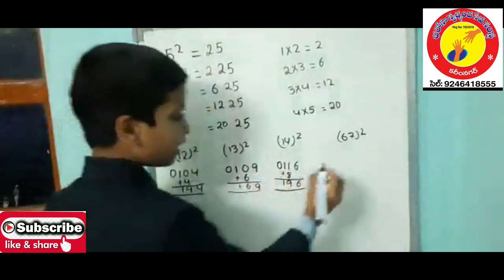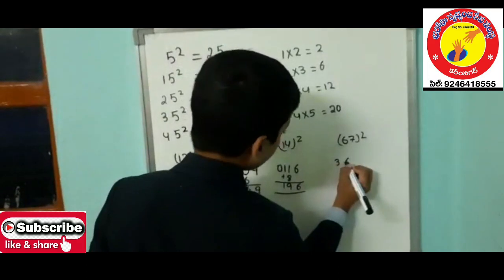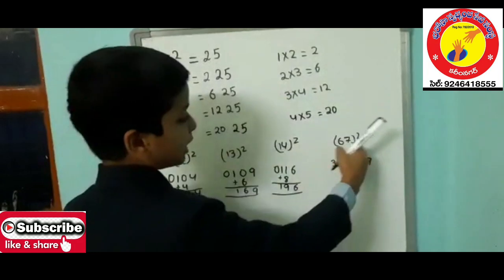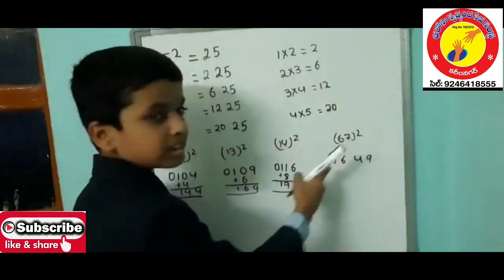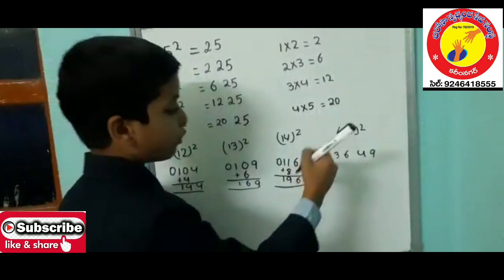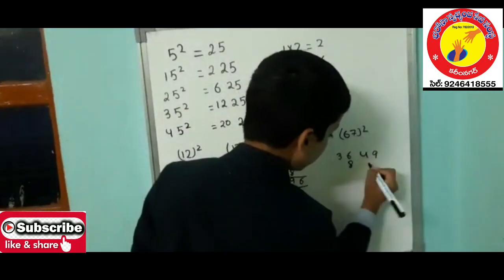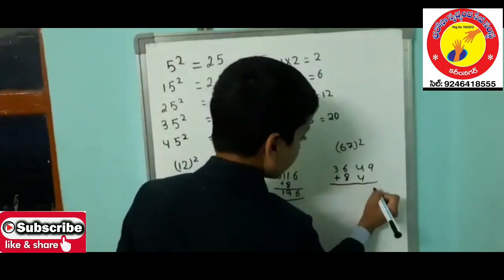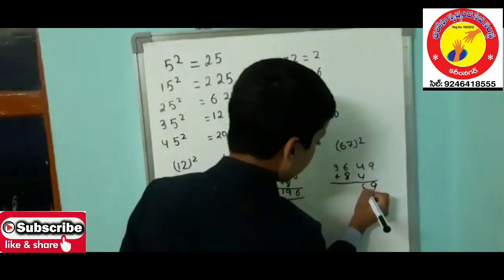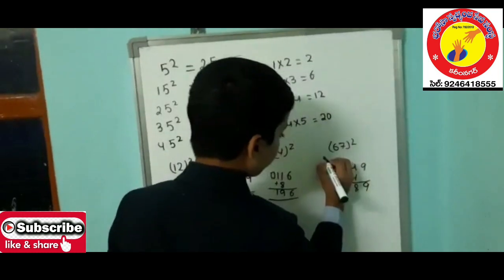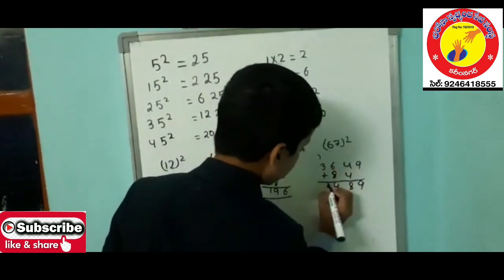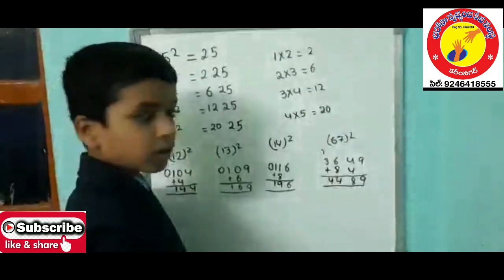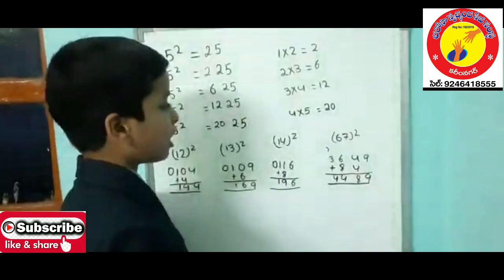For 67 squared: 6 squared is 36. 7 squared is 49. Multiply the digits: 6 times 7 is 42, then 42 times 2 is 84. Leave 1 place and write 84 here. Add them: 9, 4 plus 4 is 8, 8 plus 6 is 14, write 4 with 1 carry, 3 plus 1 is 4. Therefore 4489 is the square of 67.